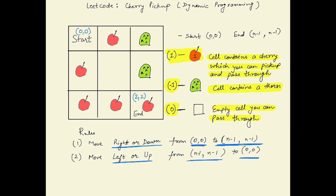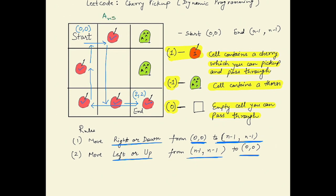For example, you first go from here and collect this cherry, then move to the next cell and collect that cherry, then move again and collect another cherry, continuing this process. You collect this, go here, collect this, and return back to start. In this case the answer is 5 — you can collect all of these cherries.